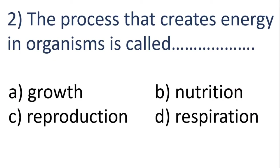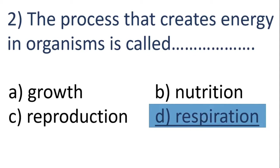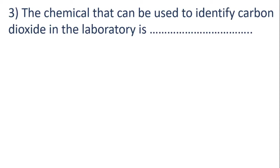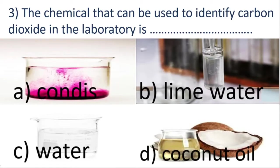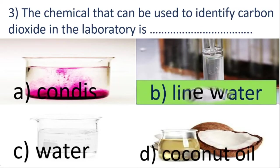Question number two: the process that creates energy in organisms is called — is it called growth, reproduction, nutrition or respiration? The correct answer is respiration. Question number three: the chemical that can be used to identify carbon dioxide in the laboratory is — first option: condis, second: lime water, third: water, and coconut oil. The chemical that we need to test carbon dioxide in the laboratory is lime water.